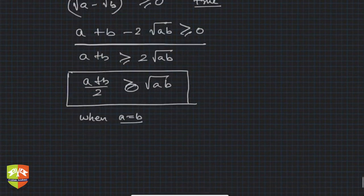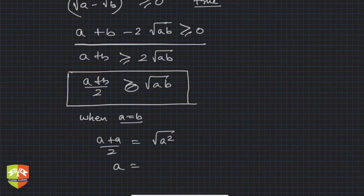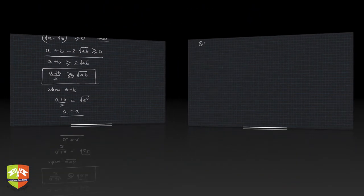When equality holds, LHS becomes (a + a)/2 = √(a²) = a, which equals a. So equality holds when a = b.